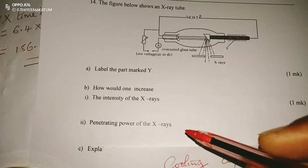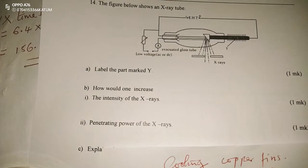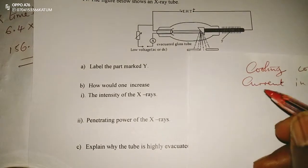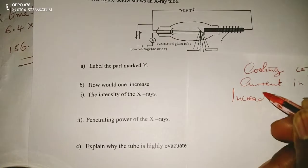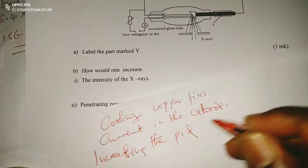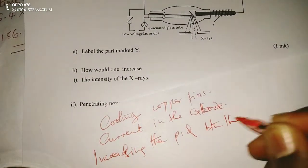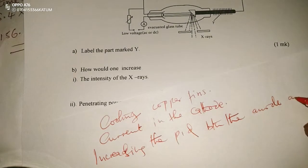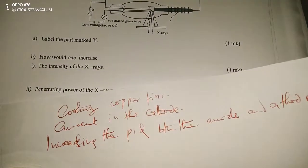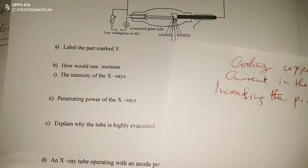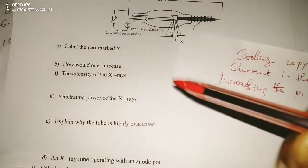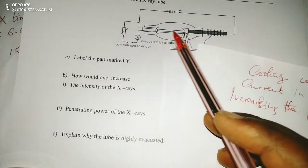Part two: the penetrating power of the X-rays — this could also be asked as the energy content of the X-rays being produced. This is varied by increasing the potential difference between the anode and the cathode.